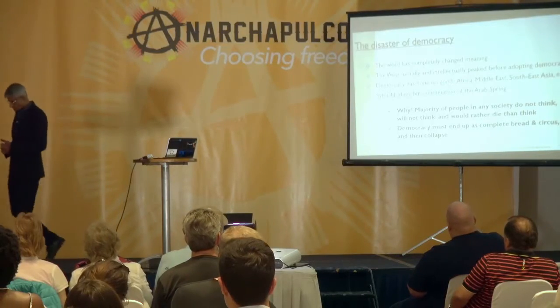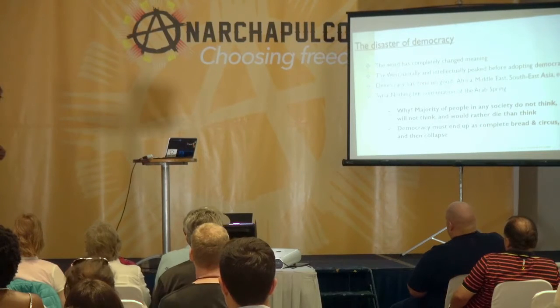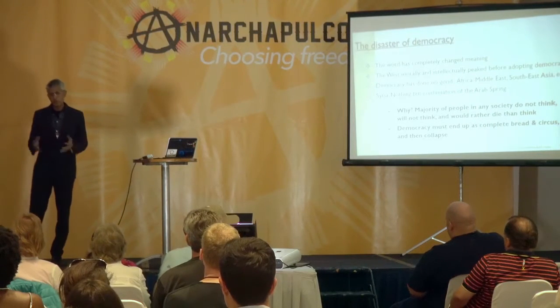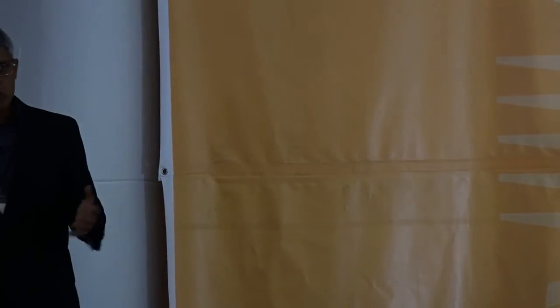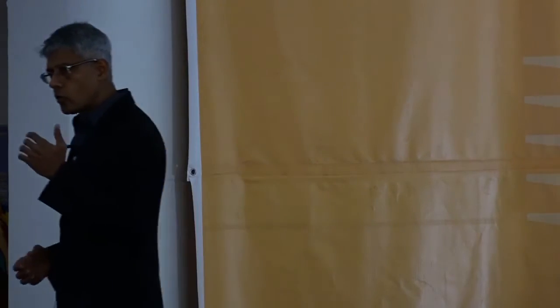The disaster of democracy. Now, a lot of people don't define words properly. The word democracy does not mean what it used to mean. It has completely changed its meaning in the last 200 years. During the Roman Republic times, and when at the end of Age of Enlightenment, 200 years back, when democracy was adopted as the way of governance in the West, in North Europe, it had nothing to do with the democracy you have today.